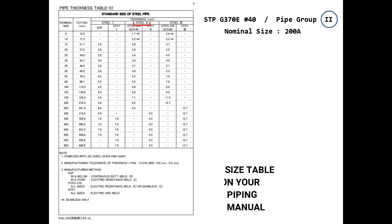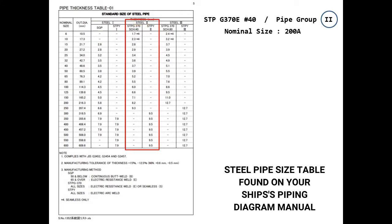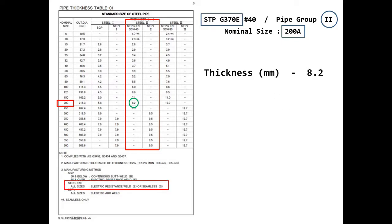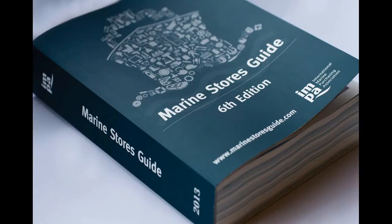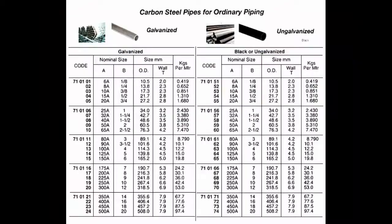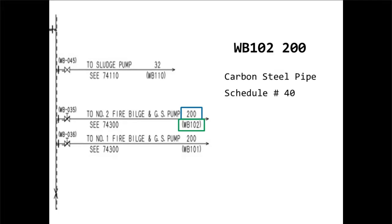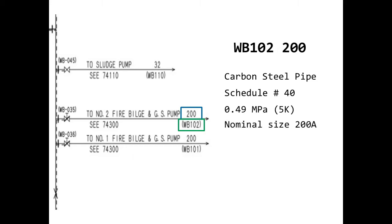STP G370 number 40 actually means that the pipe is a carbon steel pipe, schedule 40. This is what you can see in the IMPA — International Marine Purchasing Association — book when ordering the same type of pipe. To summarize, pipe WB 102 200 is a carbon steel pipe, schedule 40, with a working pressure of 0.49 MPa, a nominal size of 200A, and a working temperature of 45 degrees Celsius. Amazing, right?